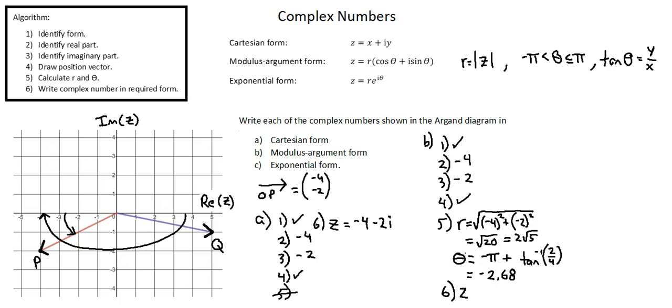Z equals R, we've calculated R as two times square root five times quantity cosine theta plus i sine theta, cosine of the angle negative 2.68 plus i times sine of the same angle negative 2.68.